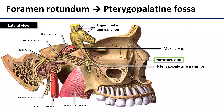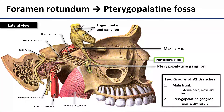The maxillary nerve exits the cranium through foramen rotundum, which will lead it directly into the pterygopalatine fossa, into the pterygopalatine ganglion. From there, it starts branching, and we're going to see two major groups of branches: branches that come directly from the main trunk of the maxillary nerve, and branches that are going to originate from the pterygopalatine ganglion. The general rule is that branches coming from the main trunk are headed to the external face and teeth, and branches coming from the ganglion are heading to the nasal cavity and to the palate.